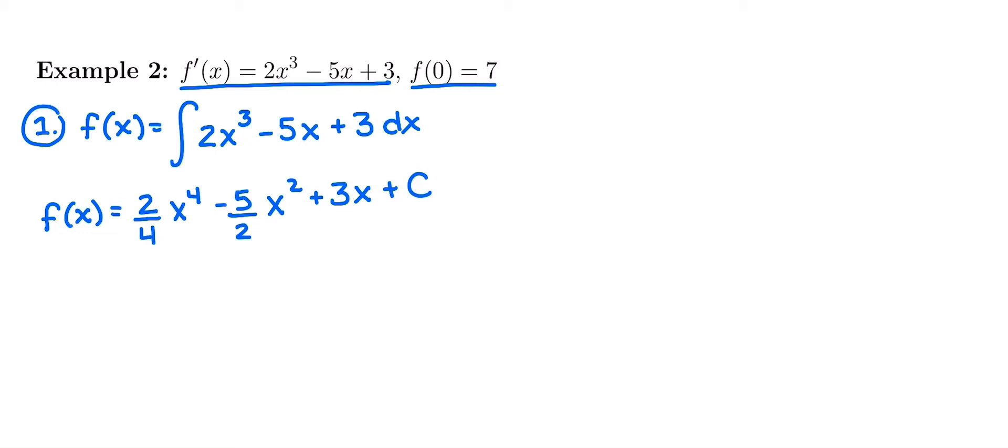So there's the original function f(x). My first step is done. Now my second step is going to be to figure out what the value of that plus C at the end is. So I am going to plug in 0 for x and see what C would have to be in order to get out 7.